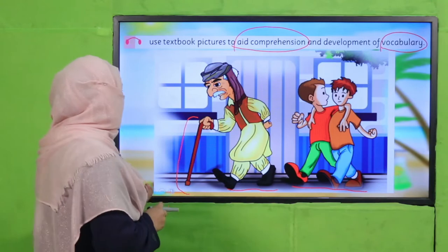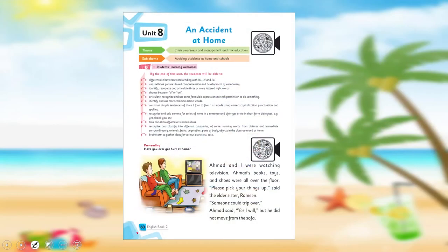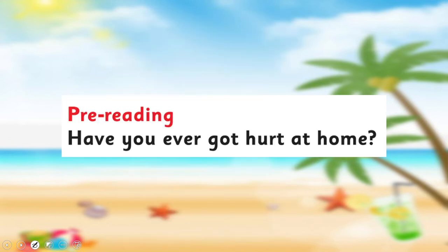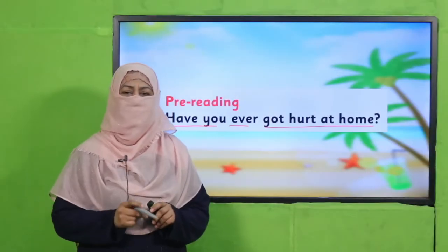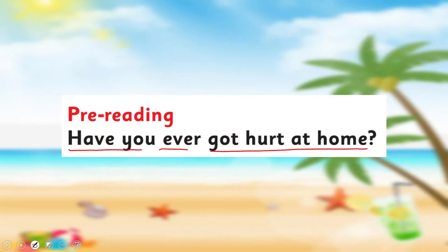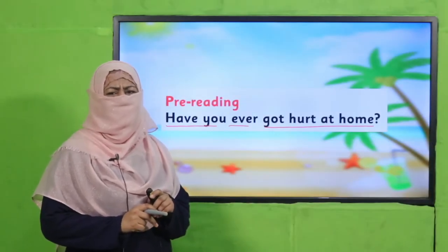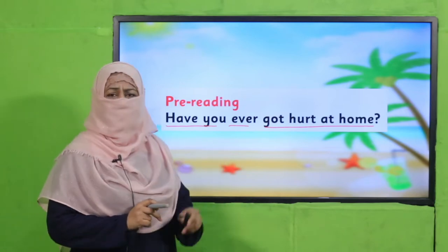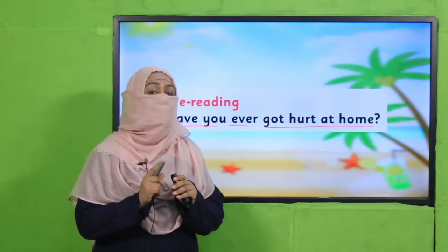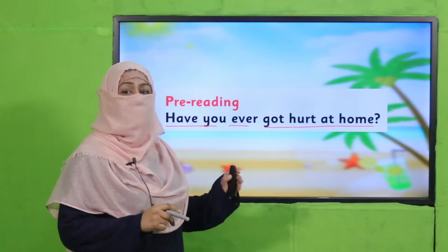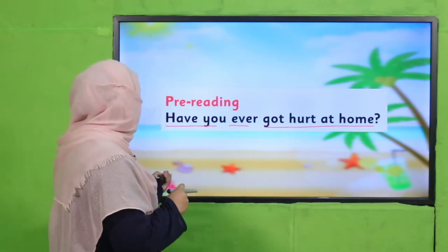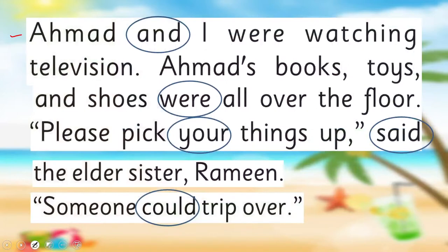Let's start reading and find out whether what we guessed is correct or not. Open your book to this page. The pre-reading question is: 'Have you ever got hurt at home?' Pause the video, answer this question to your teacher, and then come back. Yes, my dear students — accidentally getting hurt is very normal for children, but we should be careful to avoid hurting ourselves and others.